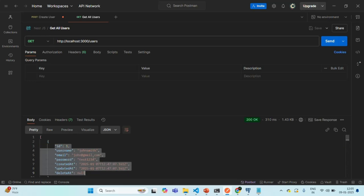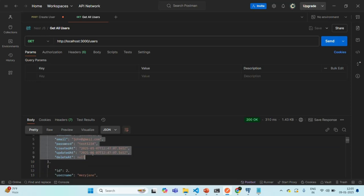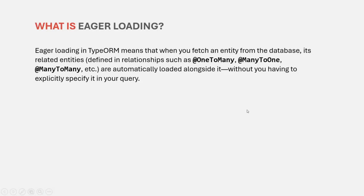But along with this, I also want to fetch the profile details for each specific user. So instead of just having the user details in the response, I also want the profile details. For that, we can use eager loading. Eager loading in TypeORM means that when you fetch an entity from the database, its related entities will be automatically loaded alongside it without having to explicitly specify it in the query. So instead of explicitly querying the related table, when eager loading is enabled, the related data is automatically fetched with the given entity.